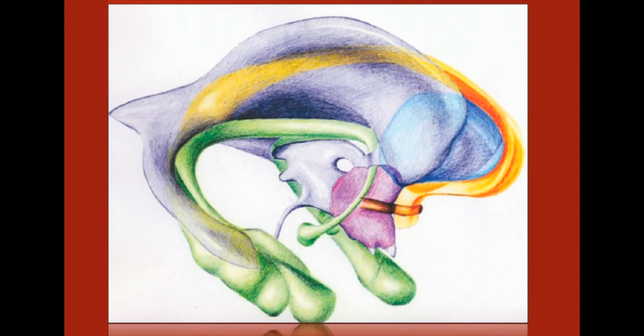Here you can see an artistic depiction of the ventricular system. The ventricular system is essentially composed of the lateral ventricles, which connect to the third ventricle through the foramen of Monroe, which then connects to the fourth ventricle through the cerebral aqueduct.